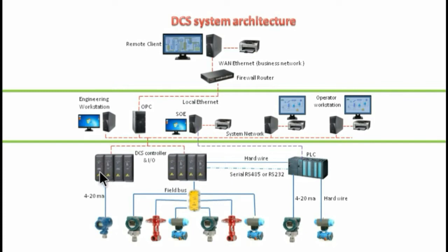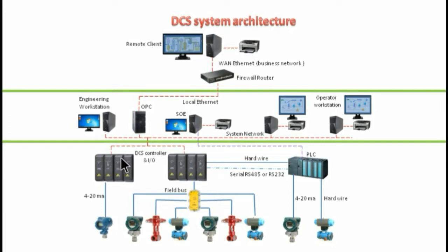The IOs and controllers will get signals from the field devices. This can be through conventional 4 to 20 milliamps or through the field bus network. The controllers will be connected to the system network, which is normally proprietary to the DCS in use. The engineering workstation will be used to configure the controllers and for troubleshooting. The DCS controllers are mainly used to handle continuous process control with many PID control loops and can be configured with different control algorithms to keep the plant running.